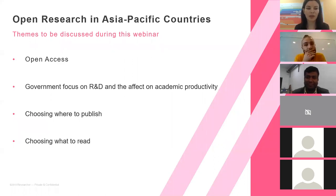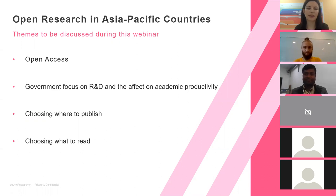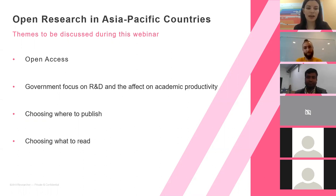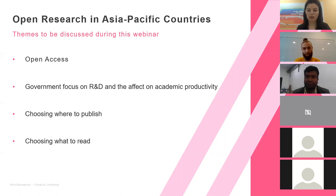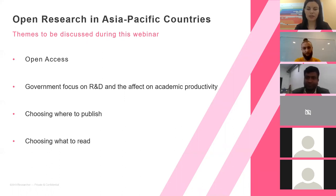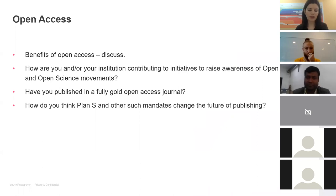I've split the questions roughly into four overarching themes: open access — a general discussion about whether it's prioritized and what the attitude is in our panelists' institutions or countries; government focus on R&D and how that affects academic productivity; questions around where to publish; and where they get their information to keep up with research. Within these themes there are also questions around publishing and reading in a local language versus English. If any other questions don't fit these themes, pop them in the chat box.